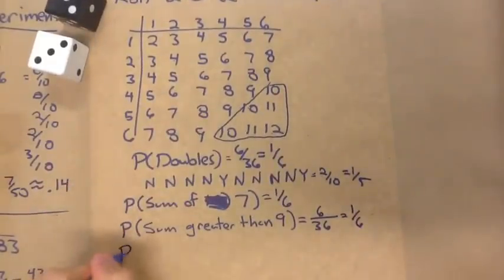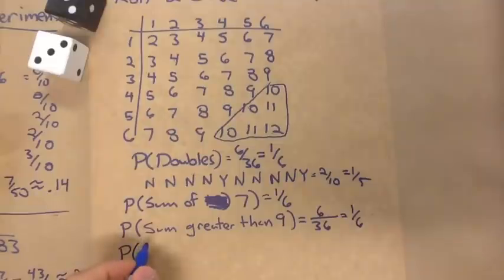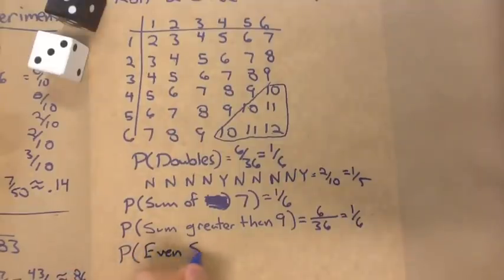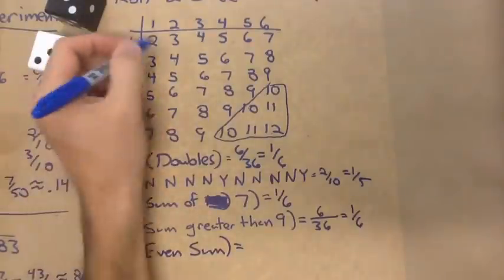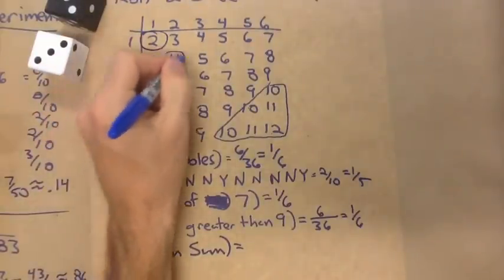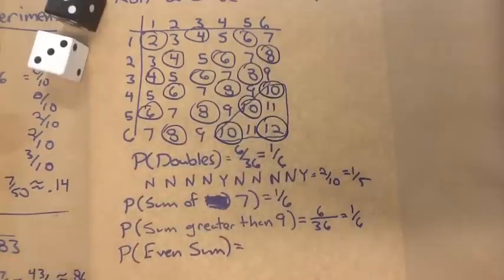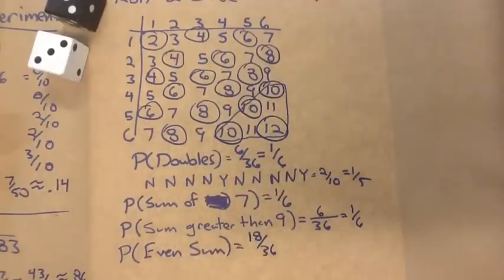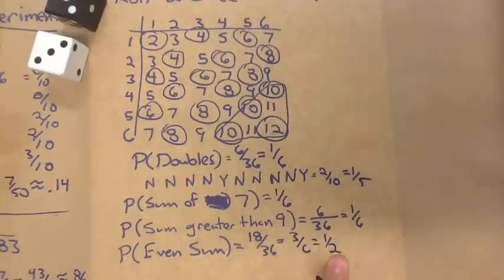I realize all of my examples have given the same probability of one-sixth, so let's throw one in that won't be one-sixth. How about the probability of an even sum? We can count all the occurrences: one, two, three, four — and there are 18 different occurrences. So we get 18 out of 36, which turns out to be one-half.